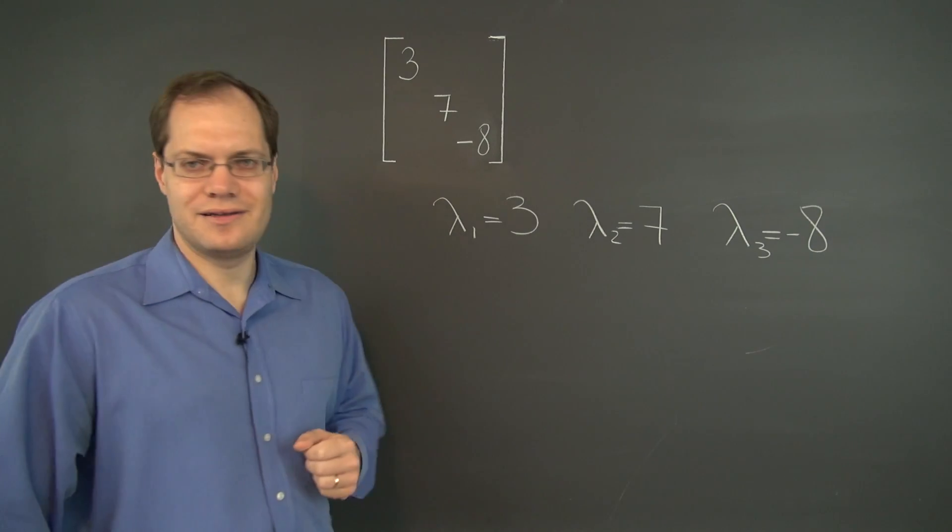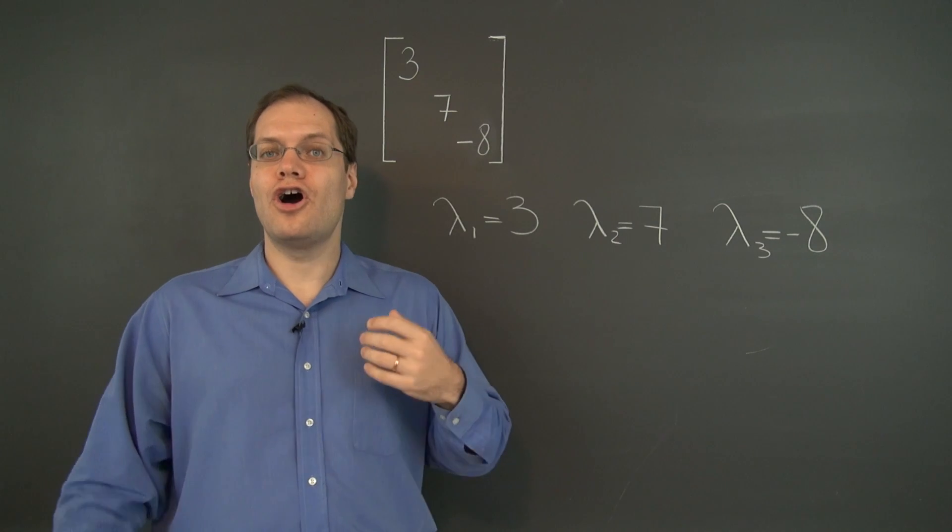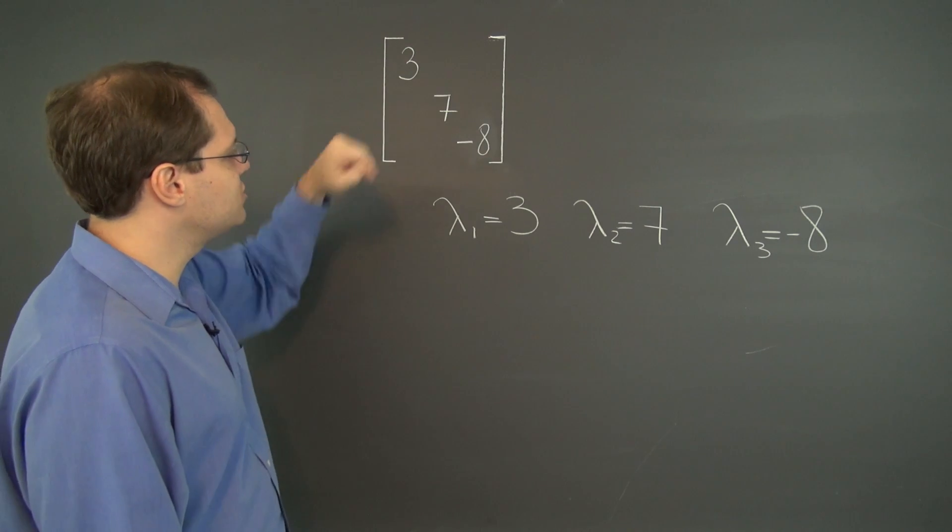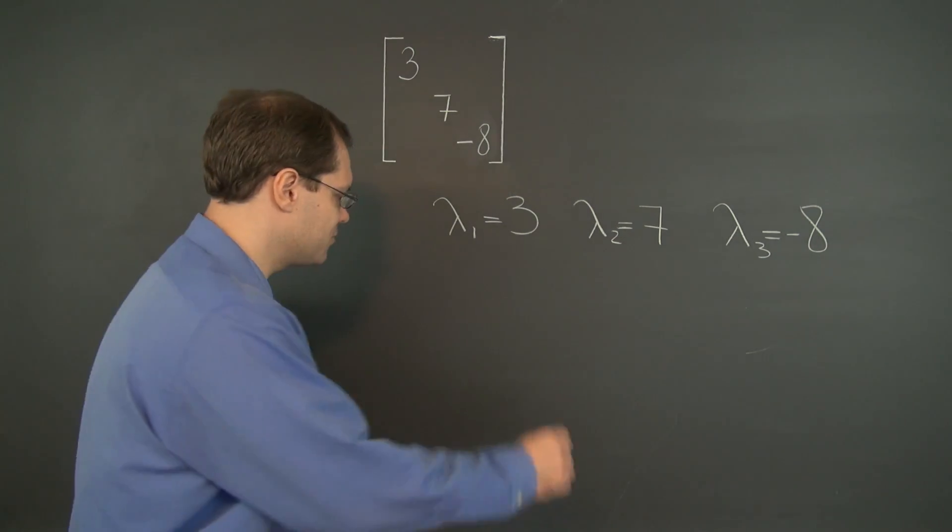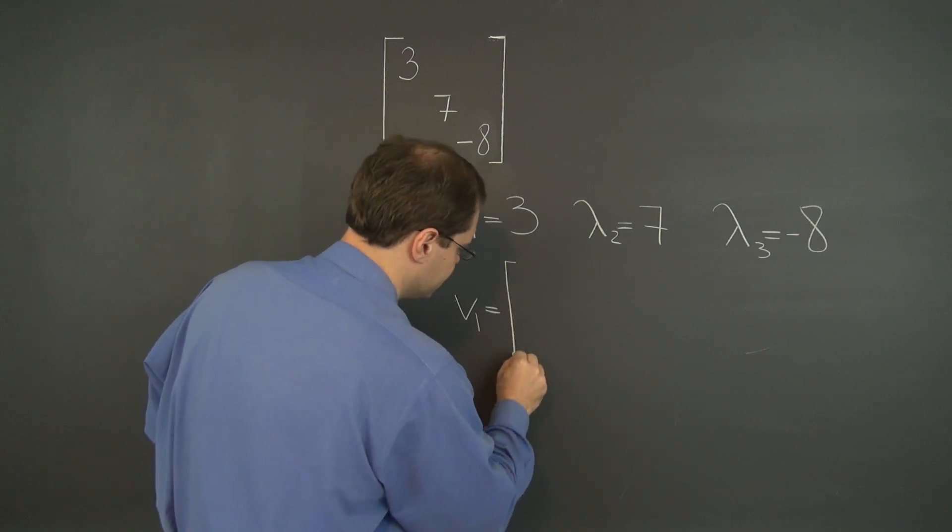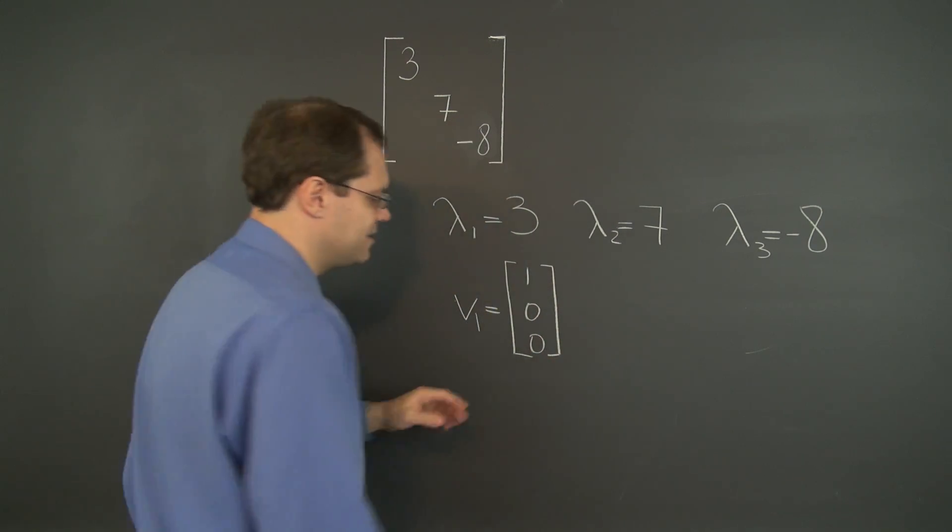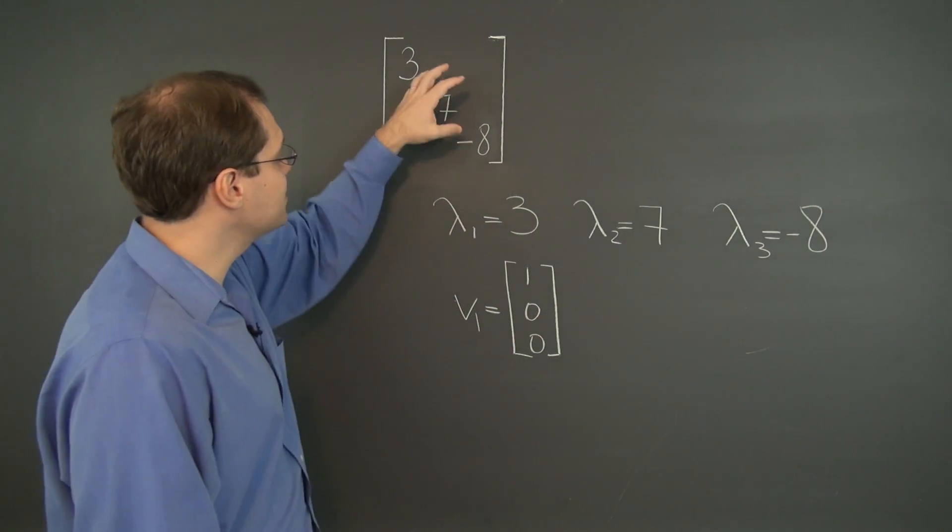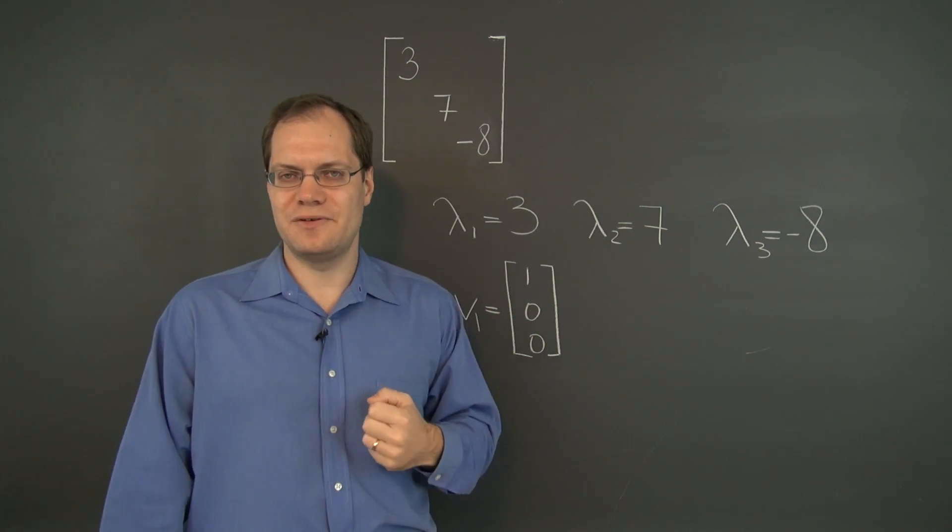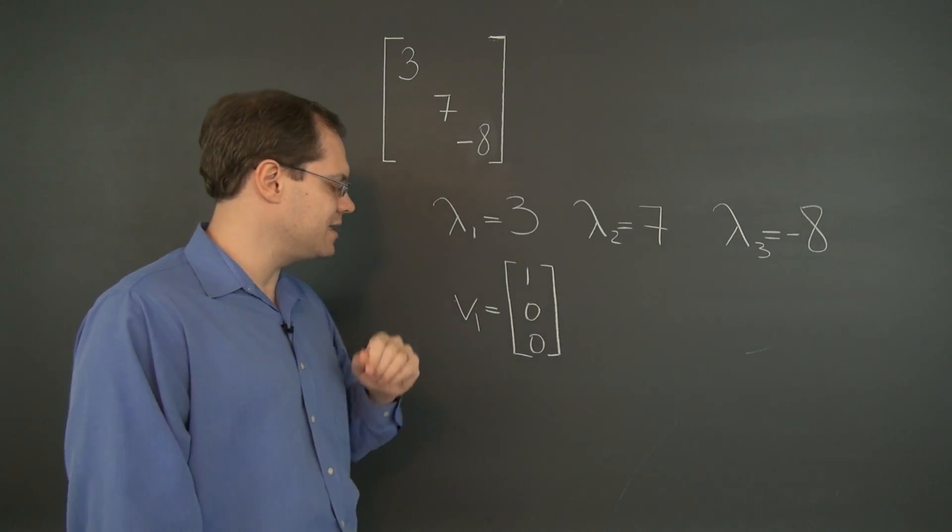Alright, 3, 7 and negative 8 and the corresponding eigenvectors are of course for lambda equals 3 are 1, 0, 0. Well let me write it down and then we'll see why that is. V1 equals 1, 0, 0. And I think it's easy to see why this is the eigenvector because when you multiply this matrix by 1, 0, 0 the result will be the first column of the matrix and it will be 3, 0, 0 which of course is 3 times the input. So indeed this is the eigenvalue and this is the corresponding eigenvector.